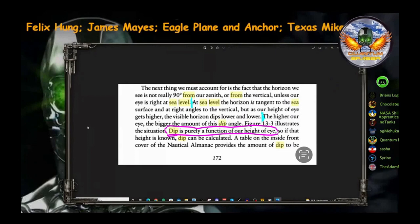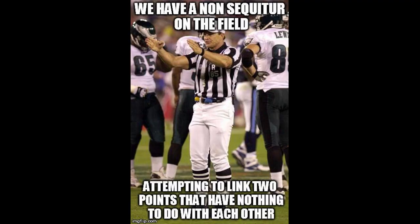He conveniently didn't read the sentence 'the higher our eye, the bigger amount of this dip angle.' But hey, he didn't read the book in the first place. Stating that the dip correction only deals with the height of eye, and drawing the conclusion that the horizon doesn't dip at all, is a non sequitur of monumental proportions. It's even worse — it just isn't true, as he has demonstrated himself.